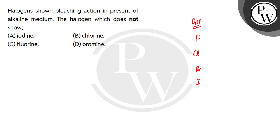So in these 4 elements, the one which does not work in alkaline medium is Fluorine. So the C option is correct. The rest are incorrect. The best bleaching action is shown by chlorine, then bromine, and the least is shown by iodine.